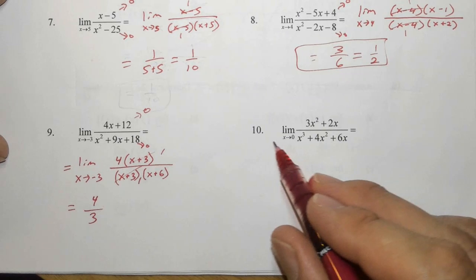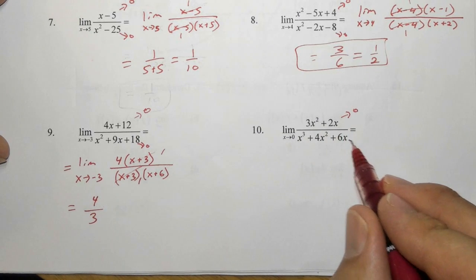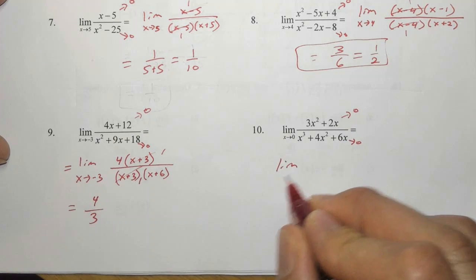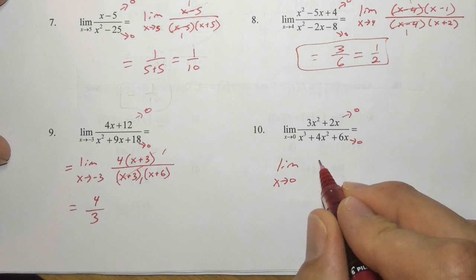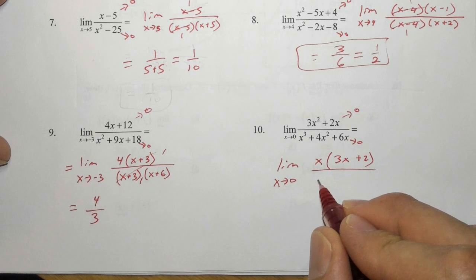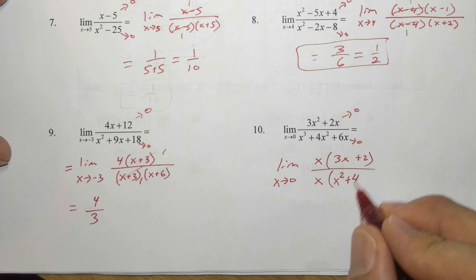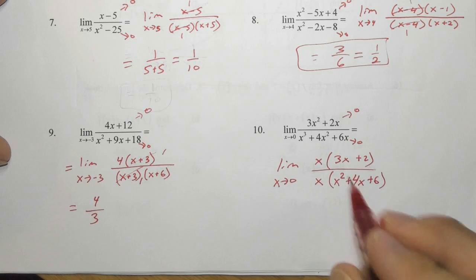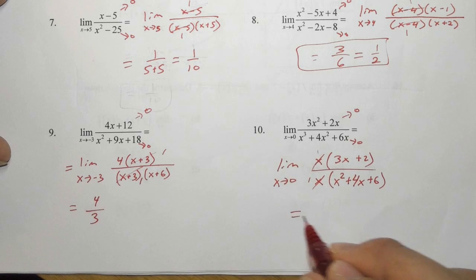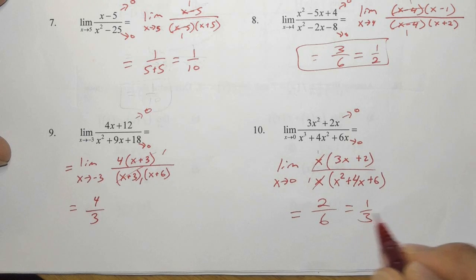Finally, with number ten, plugging zero into the numerator produces zero, and zero in the denominator produces zero. So let's factor out some x's. We have the limit as x approaches zero. We pull an x out of the numerator, leaving three x plus two, and factor out an x in the denominator, leaving x squared plus four x plus six. Those x's eliminate each other. Replacing x with zero gives two in the numerator and six in the denominator, for a final answer of one-third.